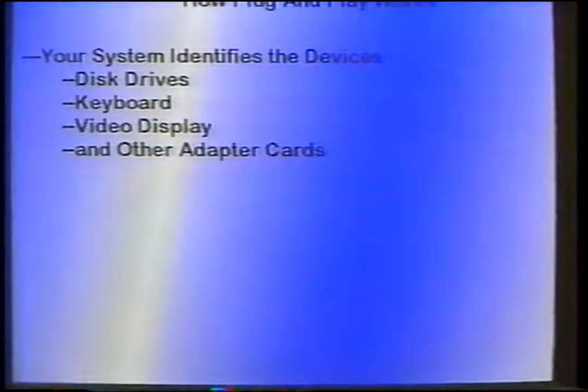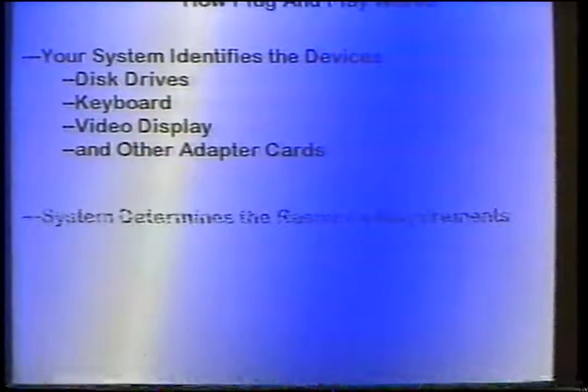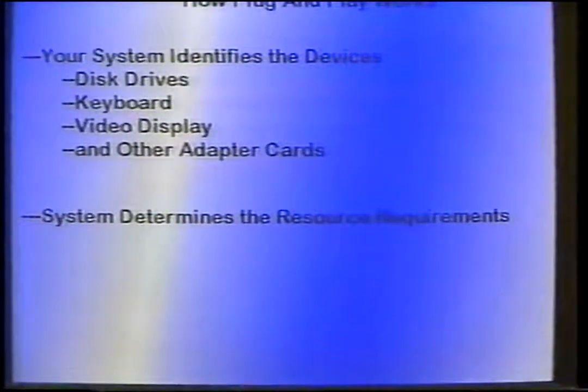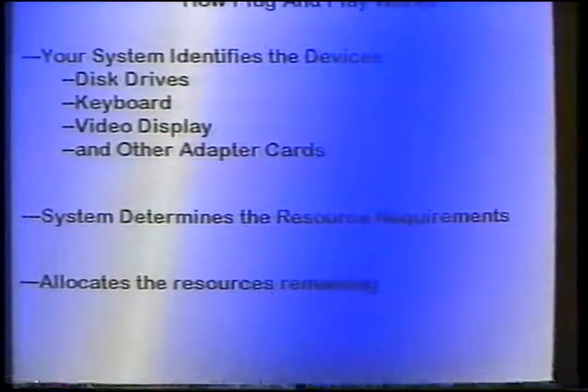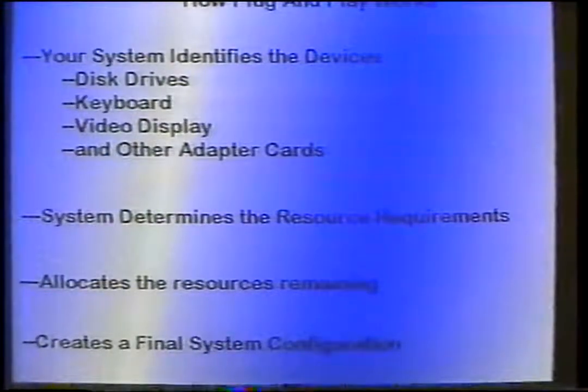With plug and play, it's much easier. First, your system identifies the devices on the motherboard plus external devices — disk drives, keyboard, video display, and other adapter cards. Then the system determines the resource requirements of each device and which can be reconfigured. Next, it allocates the resources remaining after considering other devices in use. After that, it creates a final system configuration and stores resource allocation data in the registry. It also searches the system directory to find the required device driver. If the device driver is missing, you will be prompted to insert the manufacturer's floppy disk. Then it loads the driver into memory and completes startup operations.